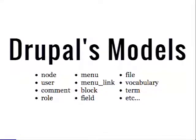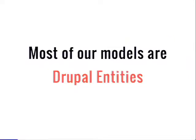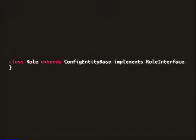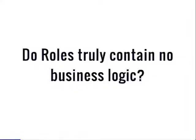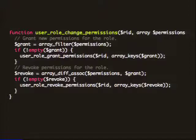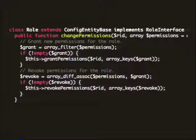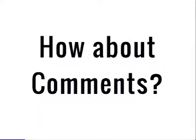Here are the most obvious Drupal models — we usually think of these as entities. We just got to a point where all the main Drupal entities have interfaces now, which is great. But looking at the roles interface, it suggests to me that a role has no business logic, and I don't think that's exactly true. Changing permissions is well within the domain of a role — that's something it should be responsible for. That's a really simple refactoring: you just stick that on the role object, implying methods like grant permissions and revoke.